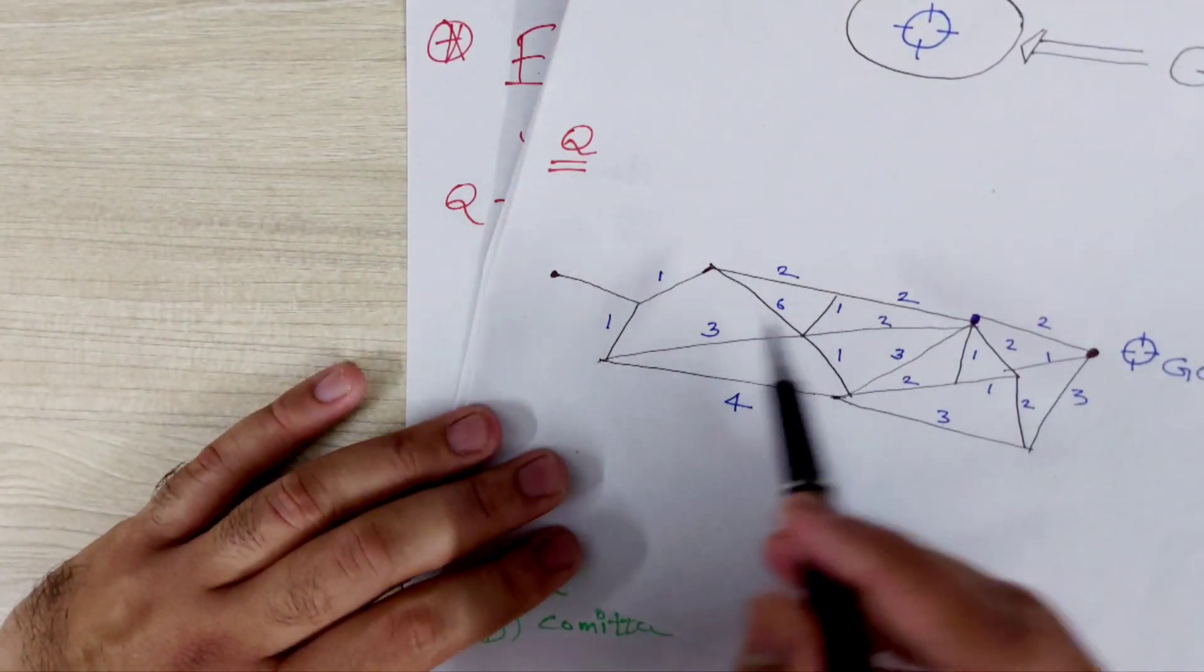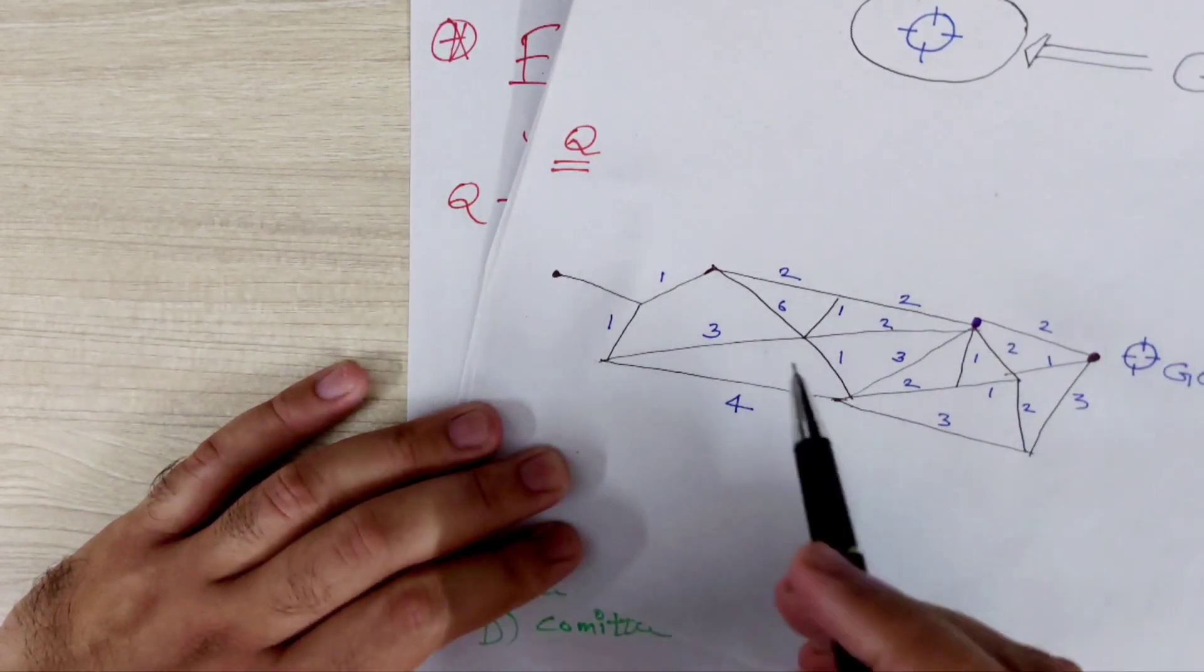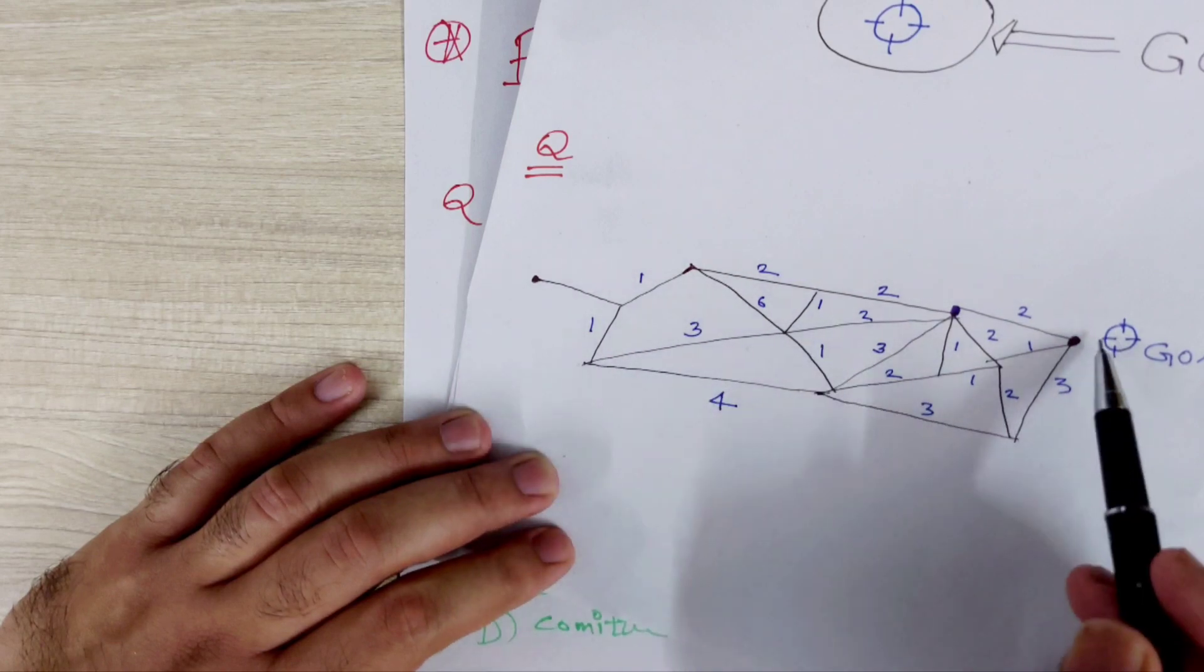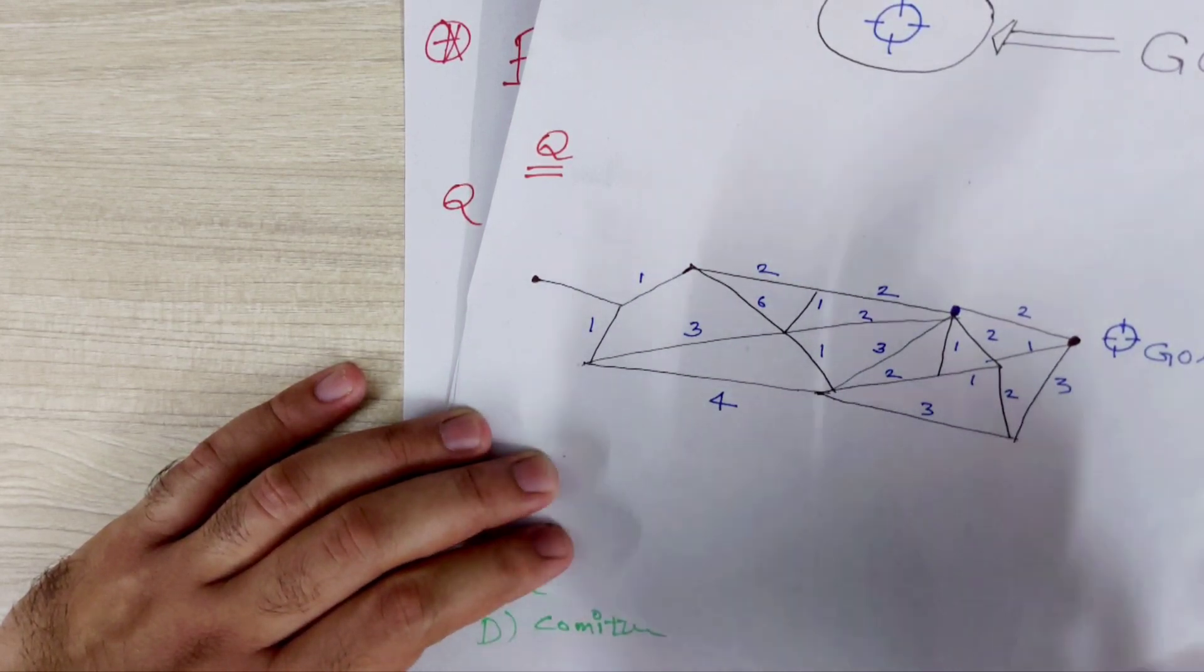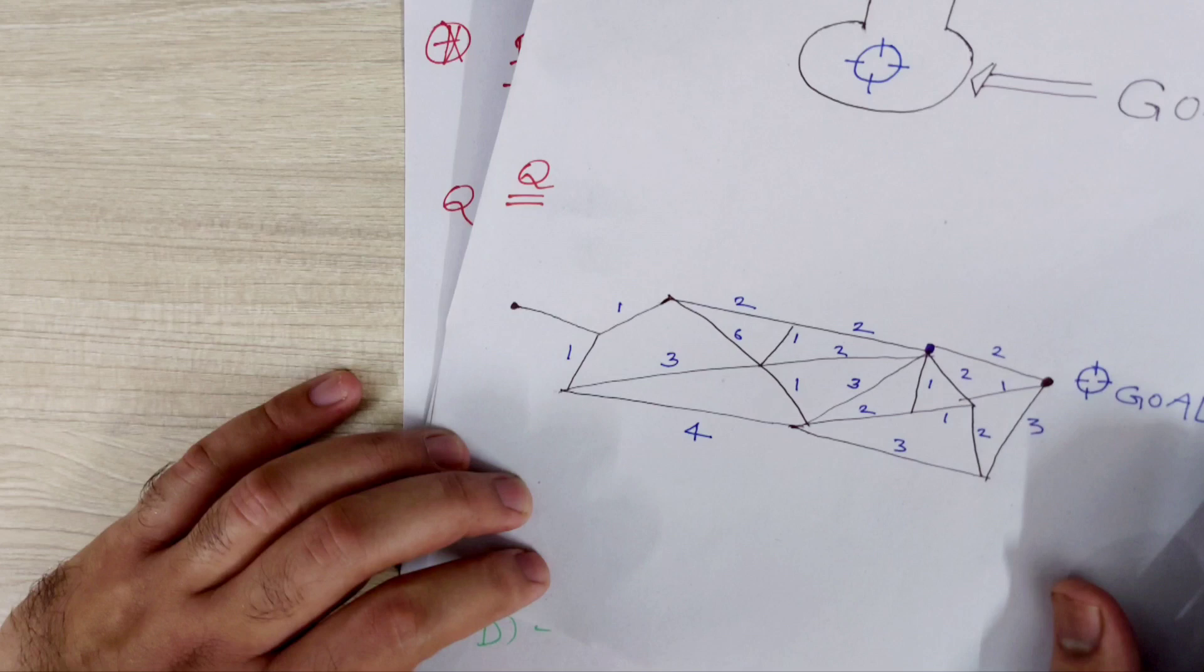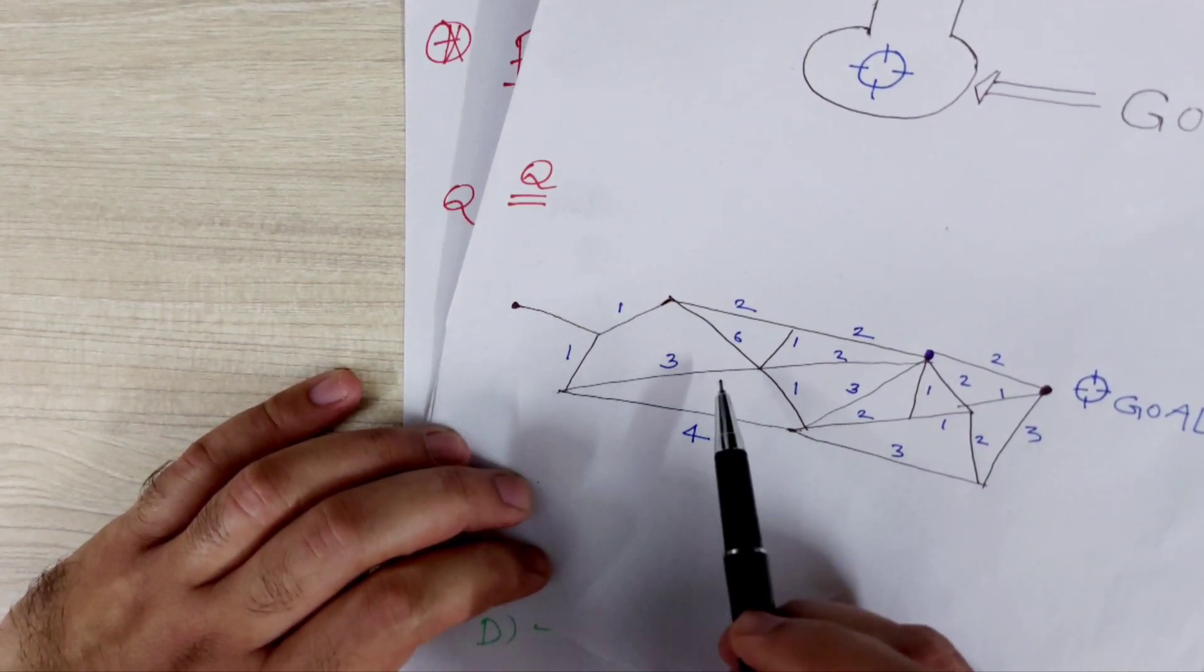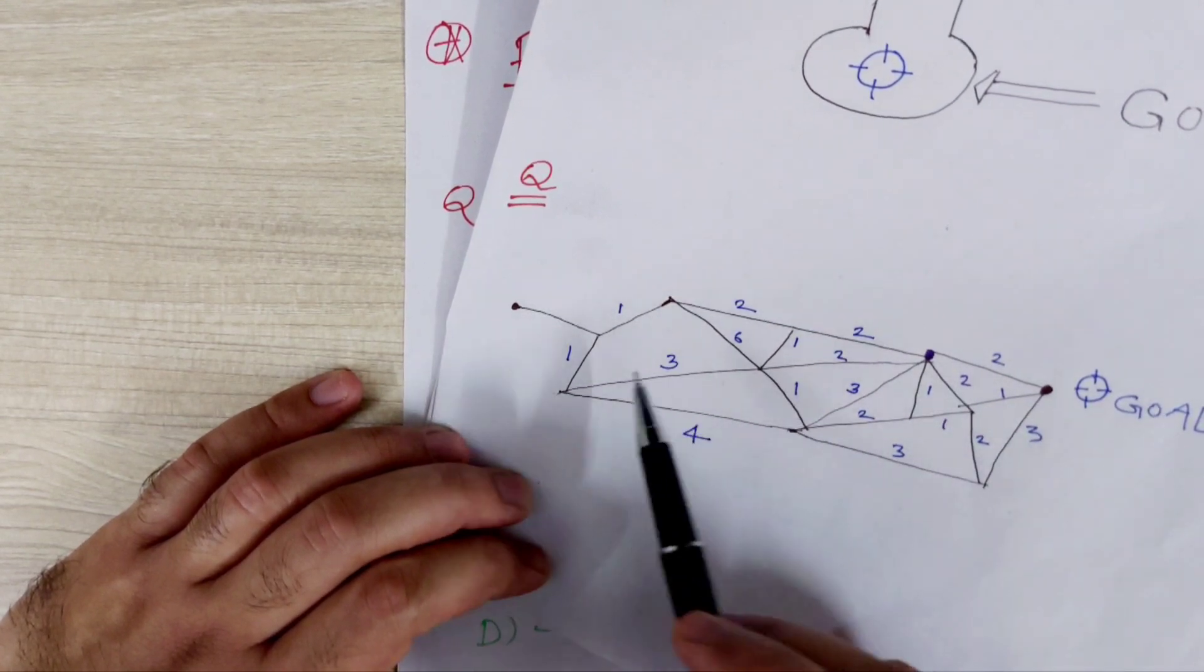Let's do another example. This is a very complex graph. So there are so many ways you can see. Like you can reach the goal through here also and from here also and so many in between also. But we have to choose the shortest path. So comment me the shortest path. According to me, I guess 3 and 2, 5 and 7.